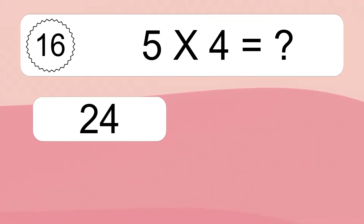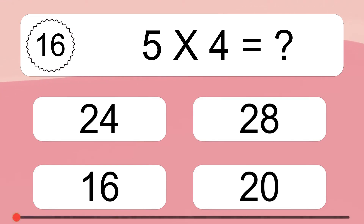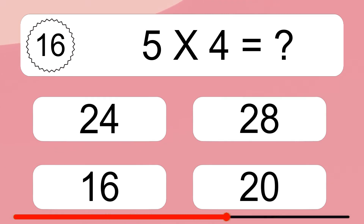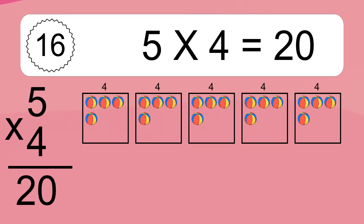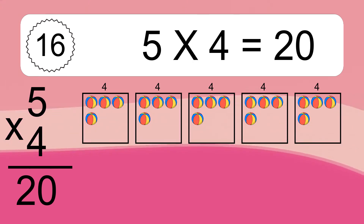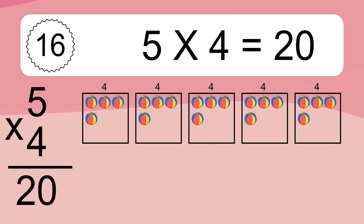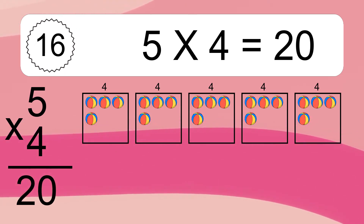5 times 4 equals what? 5 times 4 equals 20. We have 5 boxes, and each box has 4 colorful balls inside. If you count all the balls in all the boxes together, you will have 5 times 4 balls. This equals 20 balls.